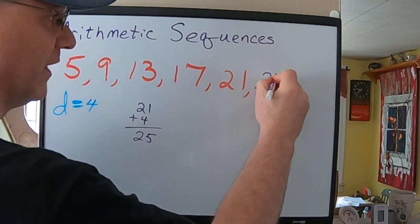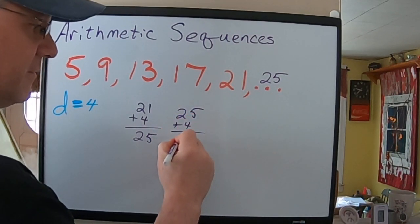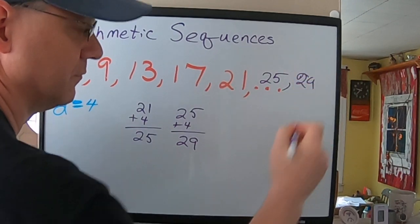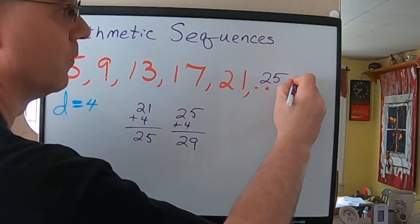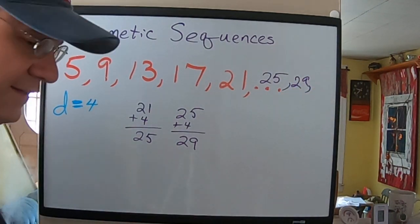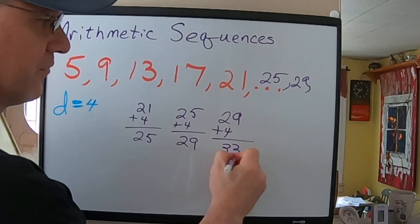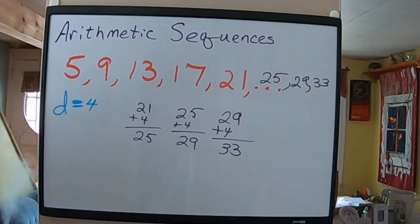So, my next term is 25. 25 plus 4, 29. 29. And then, 29 plus 4, 33. And there's my next three terms.